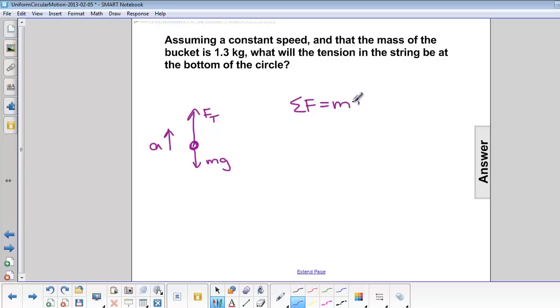So our sigma F equals ma. The sigma F part is F_T minus mg, and a is equal to v squared over r.